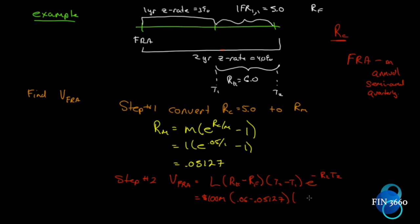Now R2 is the zero rate corresponding to the length of time T2. The two-year zero rate is four percent, so it's 0.04 times T2, which is two years — with a negative sign because we're discounting. So we have: 100,000,000 times (0.06 minus 0.05127) times one, times e to the negative 0.04 times two. Doing the math, you get eight hundred and five thousand eight hundred dollars.